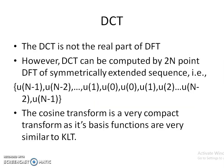DCT is not the real part of DFT — this is a common misconception. However, there is a relation: DCT can be computed by a 2N-point DFT of a symmetrically extended sequence. You place u(0), u(1), ..., u(N−1) followed by the reflected part u(N−1), ..., u(1), u(0). The cosine transform is a very compact transform, as its basis functions are very similar to KLT. After KLT, the cosine transform gives the most compact representation of a given signal.